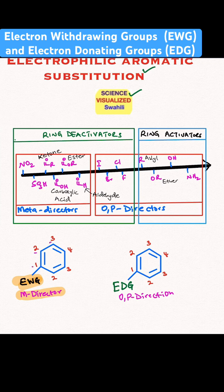So remember position 1, 2, 3, and 4. 2 is ortho, 3 is meta, and 4 is para.